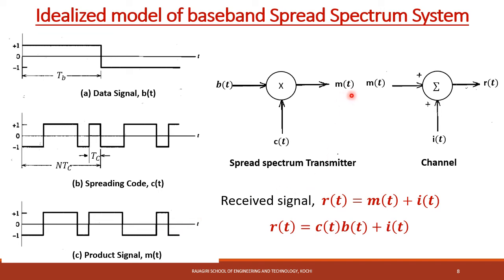The modulated signal M(t) then propagates through the channel. We assume there is some additive interference, so the received signal R(t) is defined as M(t) plus the interference I(t). Since M(t) is obtained by multiplying the data signal B(t) with the spreading code C(t), R(t) can be defined as C(t)·B(t) + I(t).